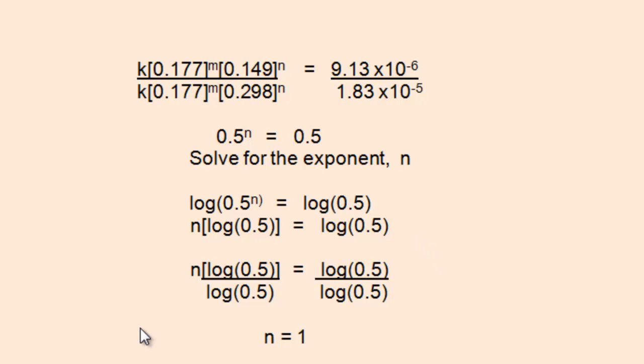We need to solve for n. So we could divide both sides by log of 0.5. And when we do that, the left side simplifies to n and the right side simplifies to 1 because log of 0.5 over log of 0.5 is 1.